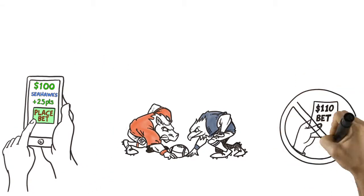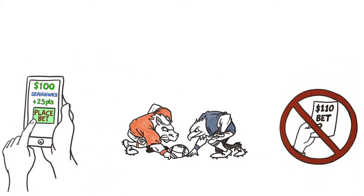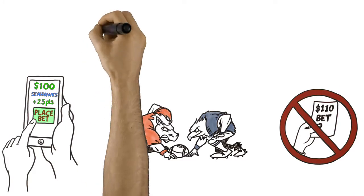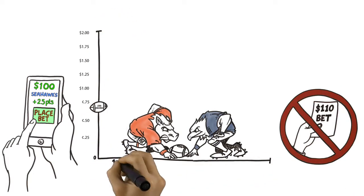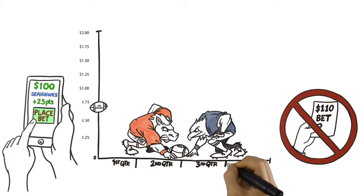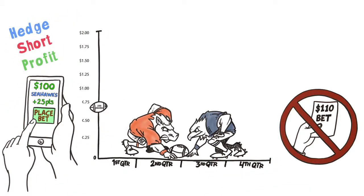Instead of betting $110 to win $100 at a typical sportsbook, at SWX, this same $100 bet gives you shares on the Seahawks, so you can hedge, short, and make profits on every trade.